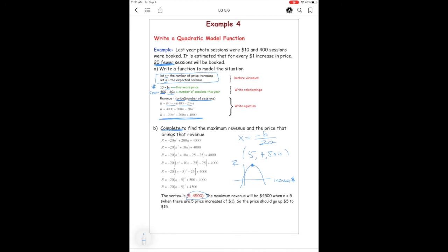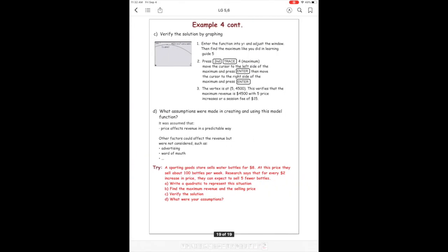And right at that point is your vertex. That's when you're maximizing. So we are increasing by $1. And there's five price increases. So that gives us $5. But remember, we're selling them for $10 at the beginning. So that's $15. So you want to set your price for $15 for those photo sessions. And then you'll maximize your revenue and make $4,500.